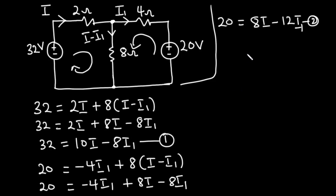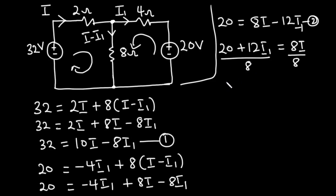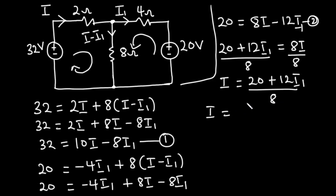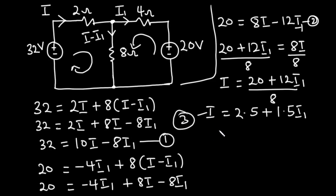From Equation 2 we can make I the subject. We transpose negative 12I1 to the left hand side, giving us 20 plus 12I1 equals 8I. Dividing both sides by 8, we get I equals (20 plus 12I1) divided by 8, which is 2.5 plus 1.5I1. Let's call this Equation 3. Now we are going to substitute Equation 3 into Equation 1.